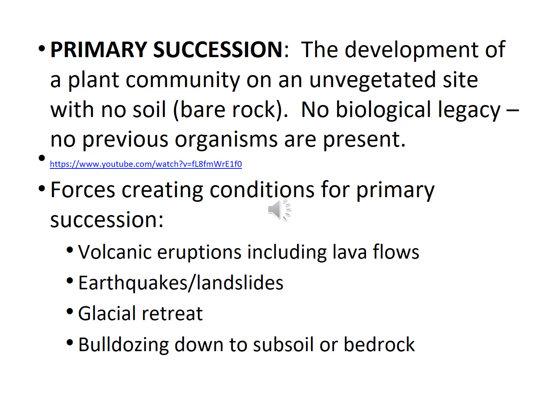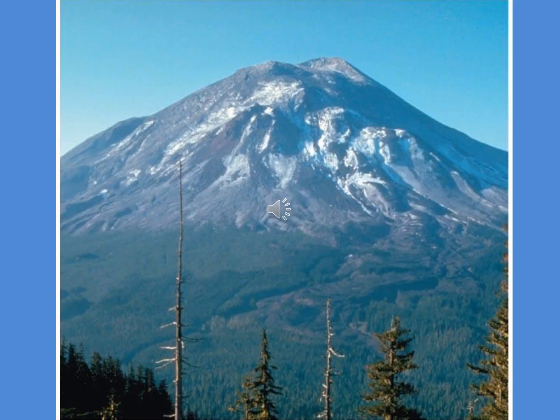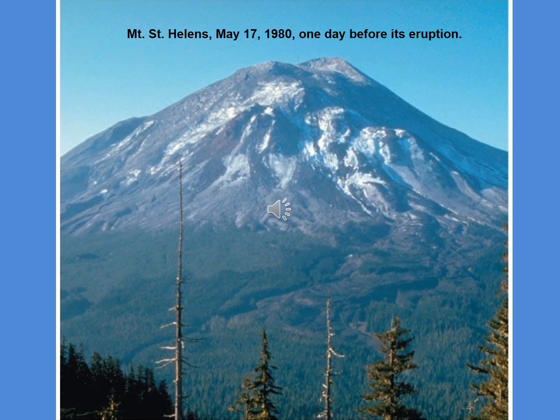There are two types of succession: primary and secondary. Primary succession occurs when a plant community develops on a site completely denuded of anything alive — no soil, no plants, no biological legacy, just inert bare rock. One way primary succession occurs is through volcanic eruptions, where an eruption completely removes all living organisms, creating a blank slate. Here is Mount St. Helens photographed May 17, 1980, one day before its eruption, then during the eruption, and then just four months after.